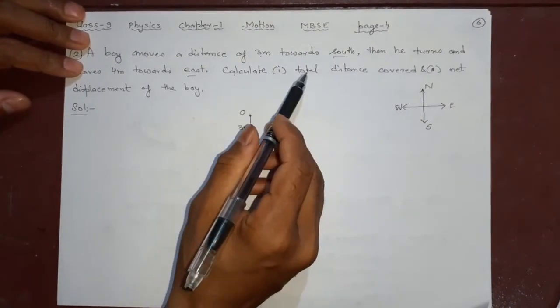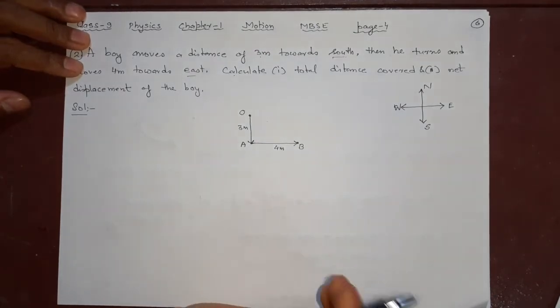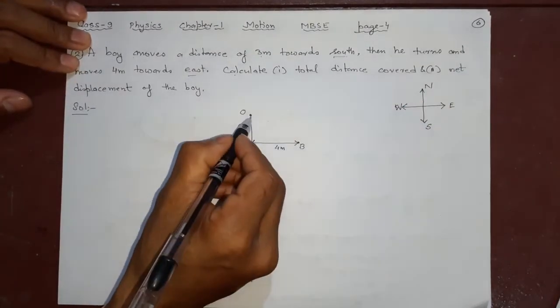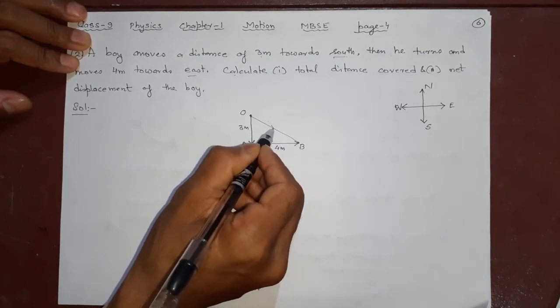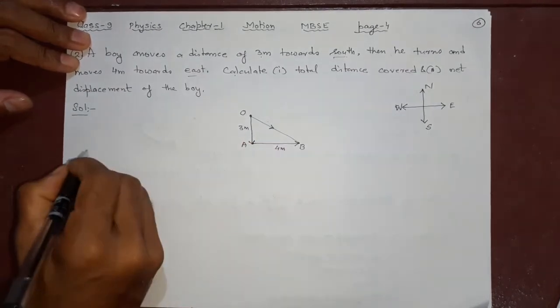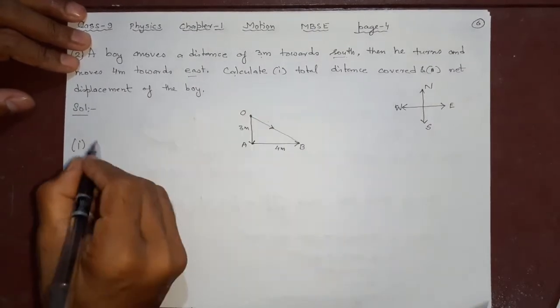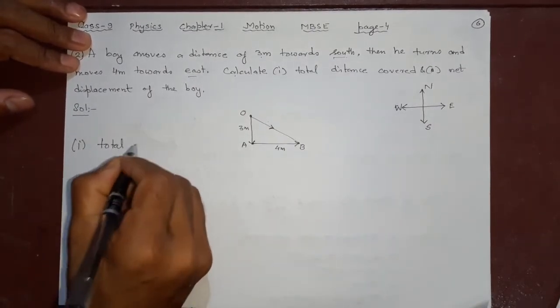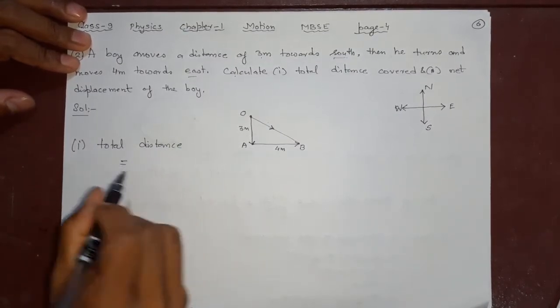Now what is the question? Calculate total distance. How much it has traveled, the whole thing. Very simple. What is the net displacement? How far he is from here, you have to tell. Number 1, total distance. How much it has covered? Remember what is total distance? Distance is the actual length covered, the original length covered.